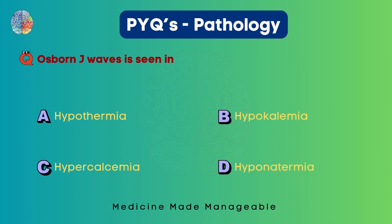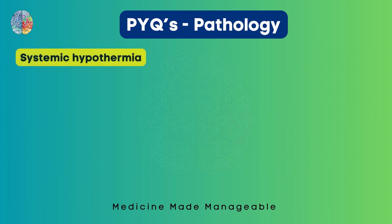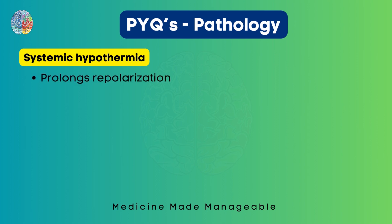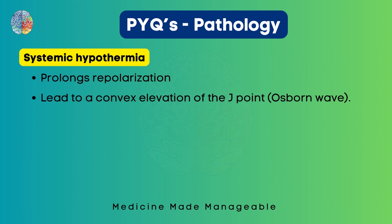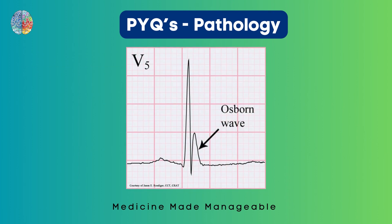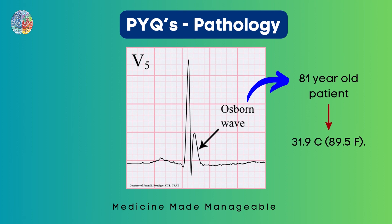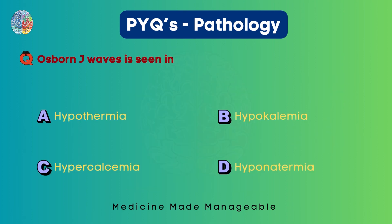Osborne J waves are seen in hypothermia, hypokalemia, hypercalcemia, or hyponatremia. The correct option is option A, systemic hypothermia. Systemic hypothermia leads to prolongation of repolarization and a convex elevation of the J point, which is called the Osborne wave. In the ECG shown, this abnormal wave is visible in a patient who was 81 years old with a temperature of 31.9 degrees Celsius. Correct option is A.